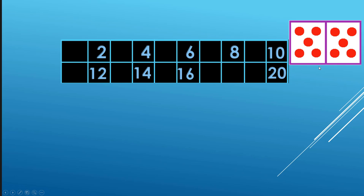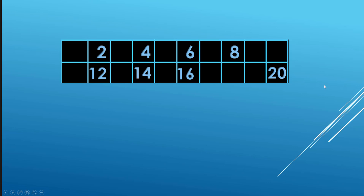Two times five is ten. Halfway point. Two times seven is fourteen. Two, four, six, eight, twelve, fourteen, sixteen, twenty.